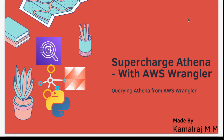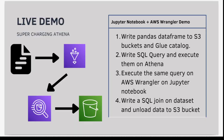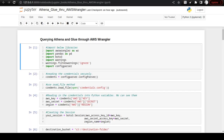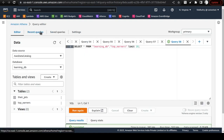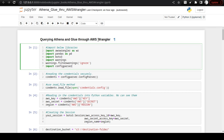Welcome back data leaders to the Insight Builder channel. We are discussing supercharging Athena with AWS Wrangler. In the last video, we were discussing creating a data pipeline where we take two text files, create two tables on Glue Catalog, query and join these two tables in Athena, and then write the result to an S3 bucket. That is what we are going to do in this video — and we are not going to use the AWS Glue console or Athena at all; we are just going to use Jupyter Notebook.